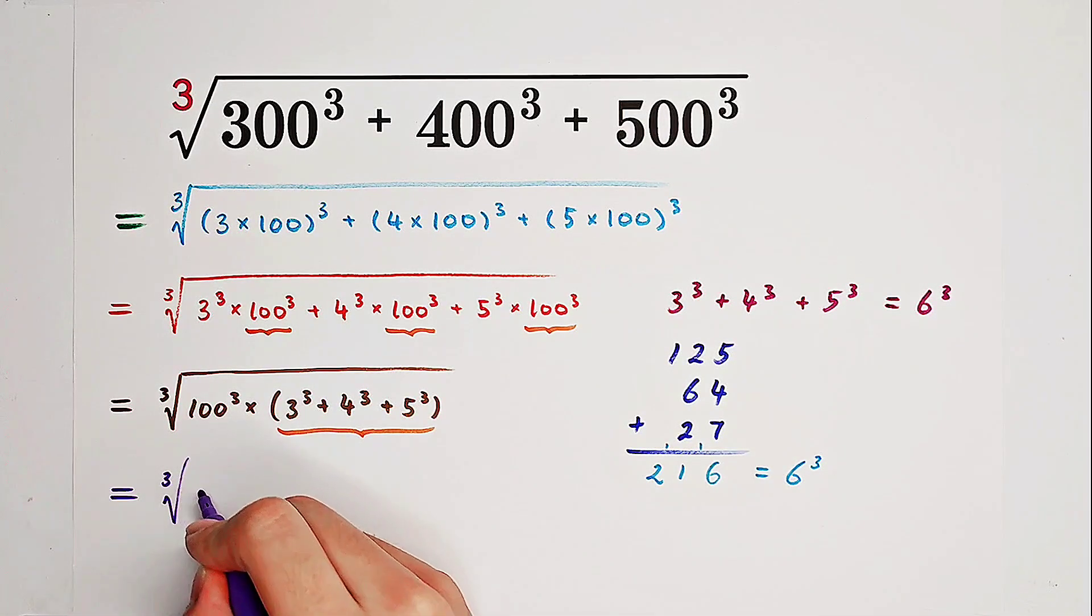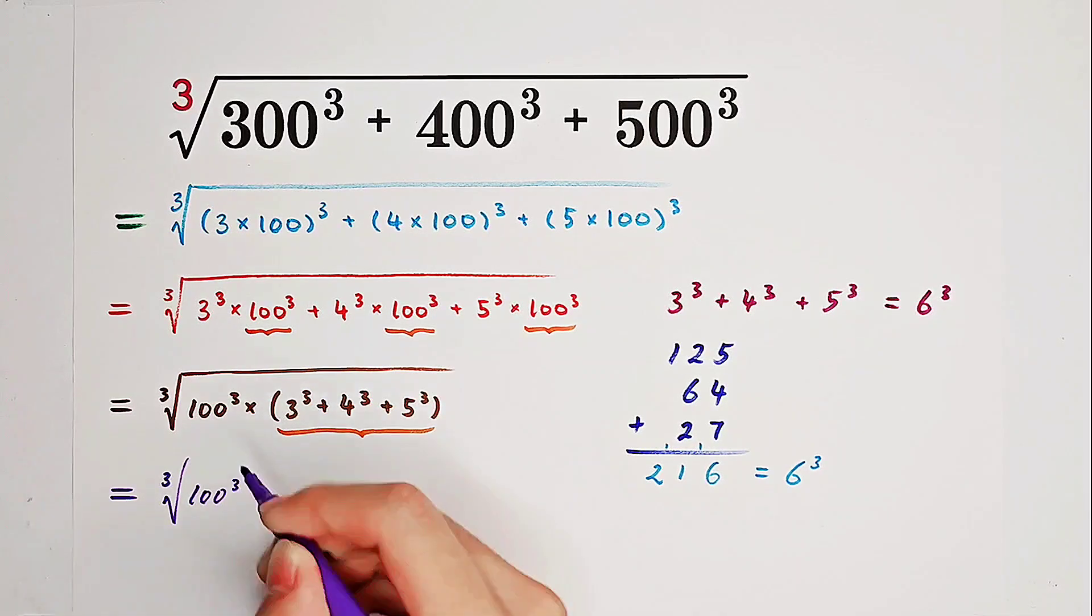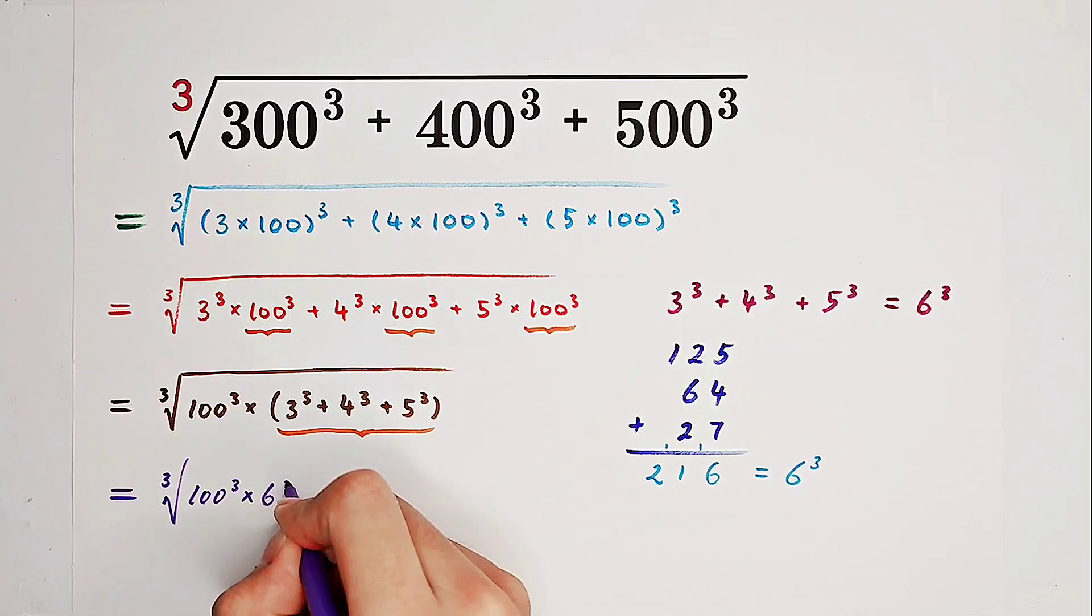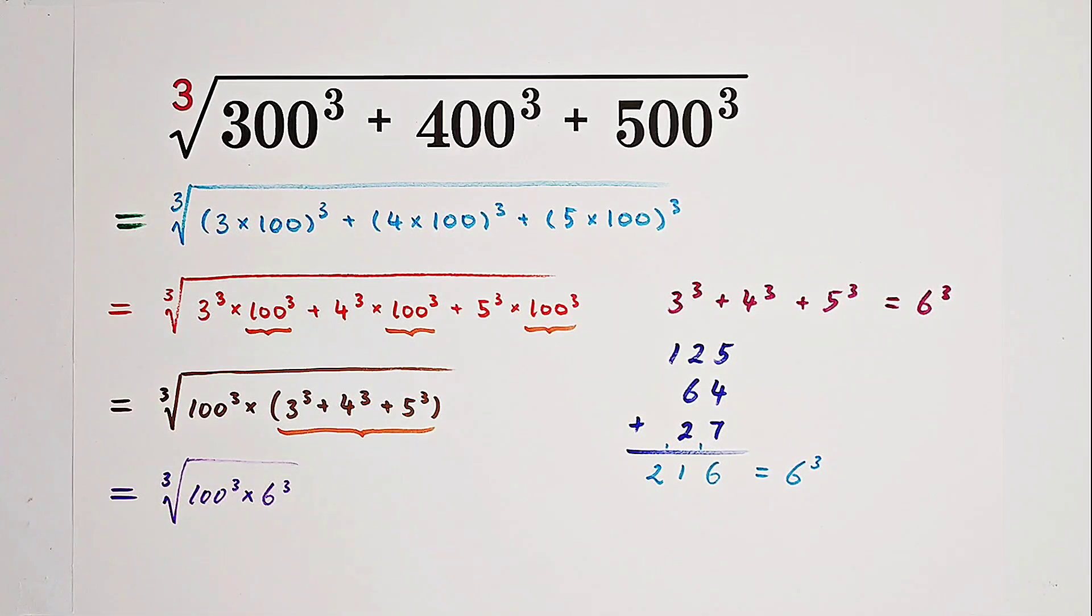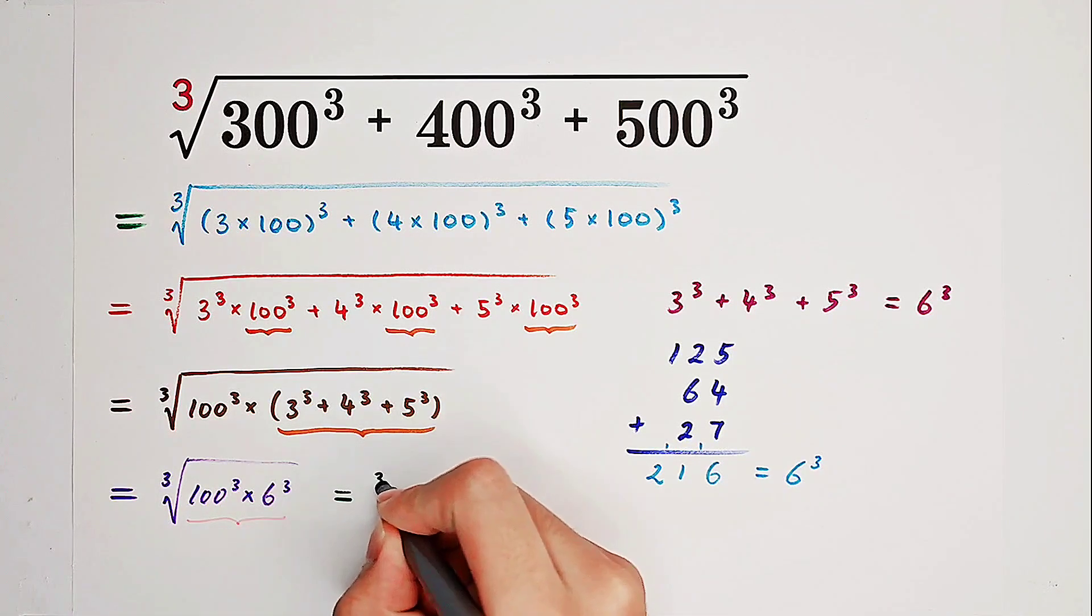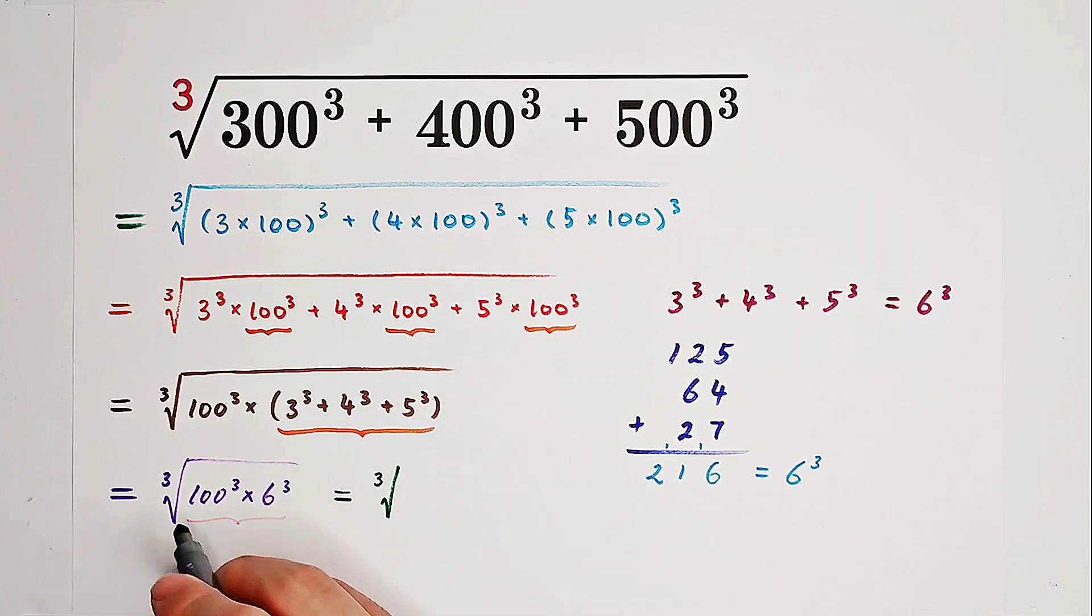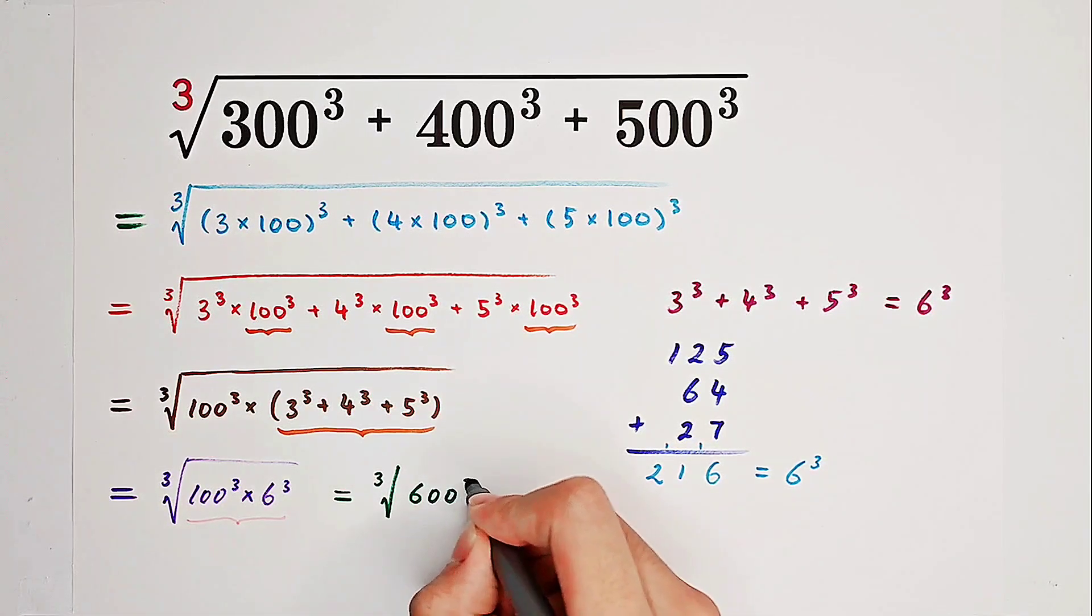And it's the cube root of 100 cubed times 6 cubed. And 100 cubed times 6 cubed, this one is just the cube root of 600 cubed.